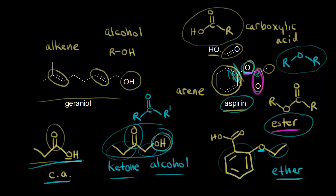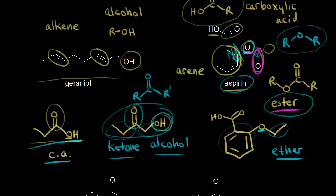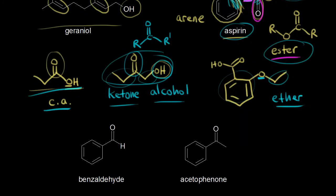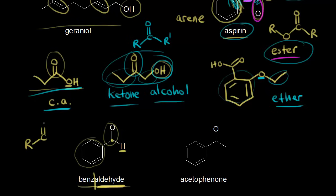More common mistakes involve mixing up aldehydes and ketones. Starting with benzaldehyde — the name is a dead giveaway. We have an aromatic ring (an arene) and then an aldehyde: a carbonyl with a hydrogen directly bonded to the carbonyl carbon. So we have R-C(=O)-H — that is an aldehyde.